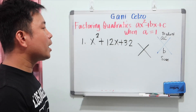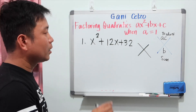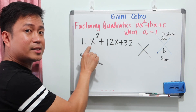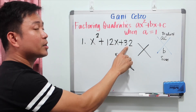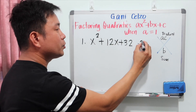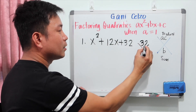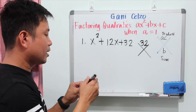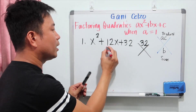The top of the diamond is the product of a and c. So a is 1 — it's just x squared — so a is 1 and c is 32. That means we're looking for two numbers whose product is 32 and whose sum is 12.